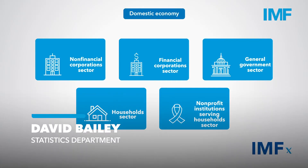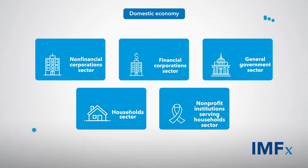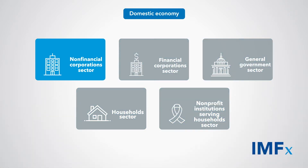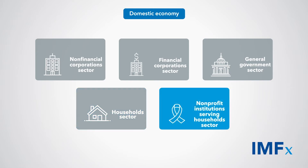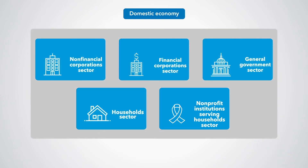The economy of a country, called the domestic economy, is divided into five mutually exclusive resident institutional sectors: the non-financial corporation sector, financial corporation sector, general government sector, household sector, and non-profit institutions serving households sector. The five sectors of a domestic economy are standard across all macroeconomic statistics.